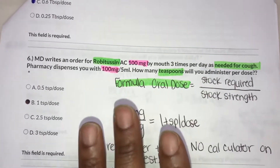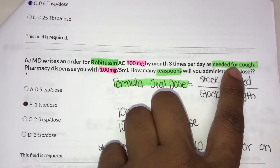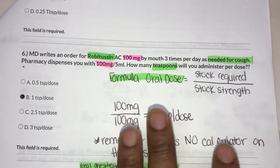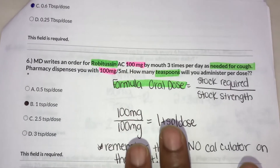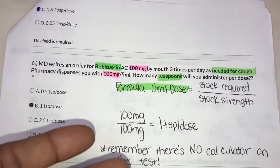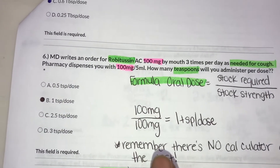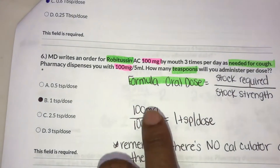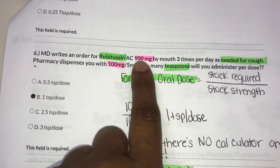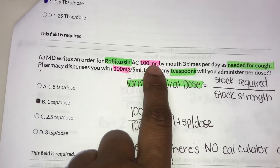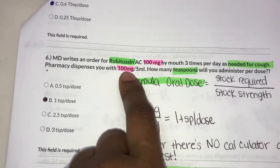One thing I'd like to do is highlight the medication and its purpose, that way you know — because with pharmacology you want to know the type of medications you're dealing with so you can get familiar with them. The top two numbers you're going to be using for this situation are 100 mg by mouth and 100 mg.